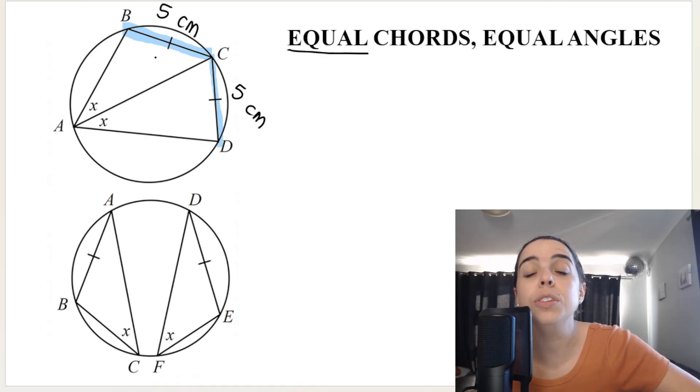What the theorem says is those angles that are opposite those chords have equal angles. So opposite this side, we've got this angle. Opposite this side, we've got this angle.